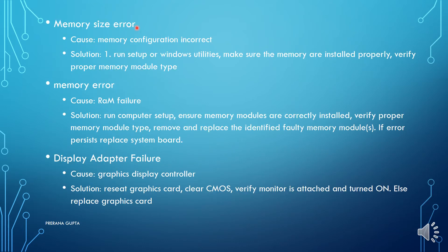Memory size error is caused by incorrect memory configuration. Solution: run setup or Windows utilities and make sure memory is installed properly, verifying the proper memory module type. Memory error is caused by RAM failure. Solution: run computer setup, ensure memory modules are correctly installed, verify proper memory module type, and remove and replace the identified faulty memory module. If the error persists, replace the system board.